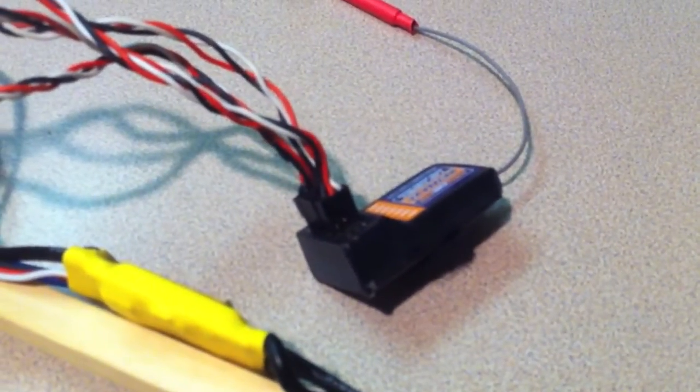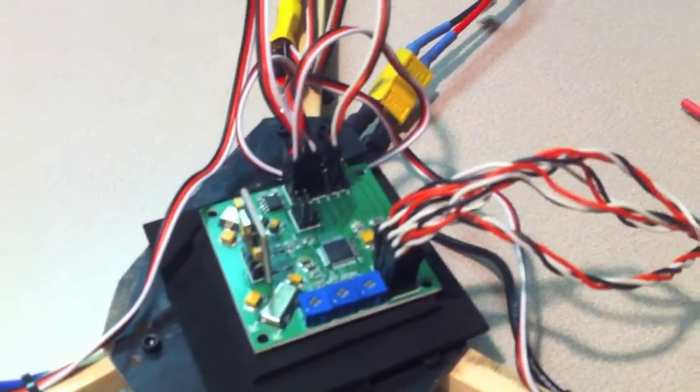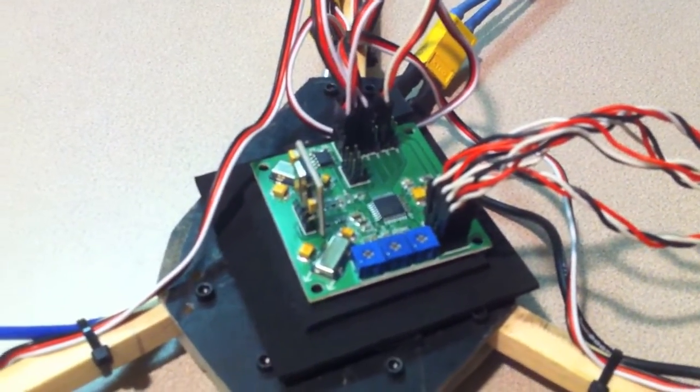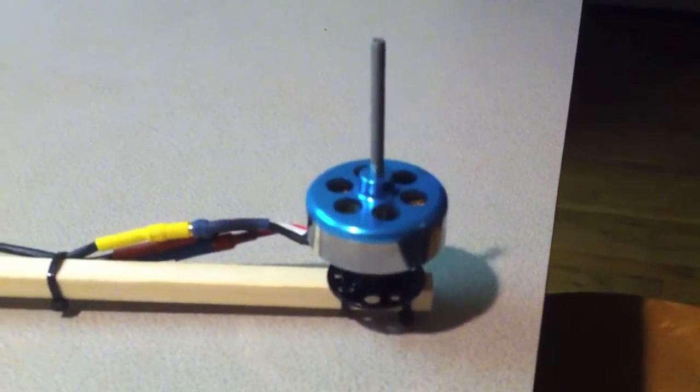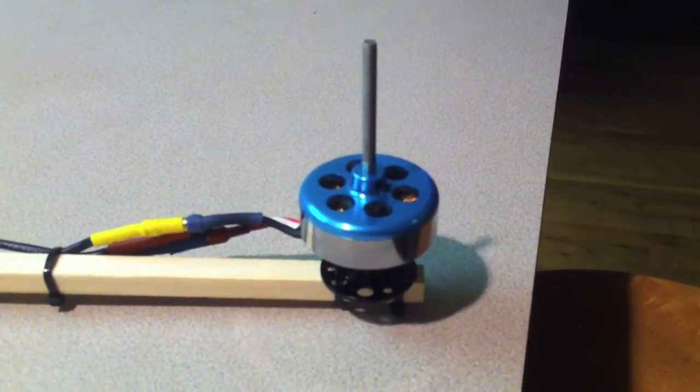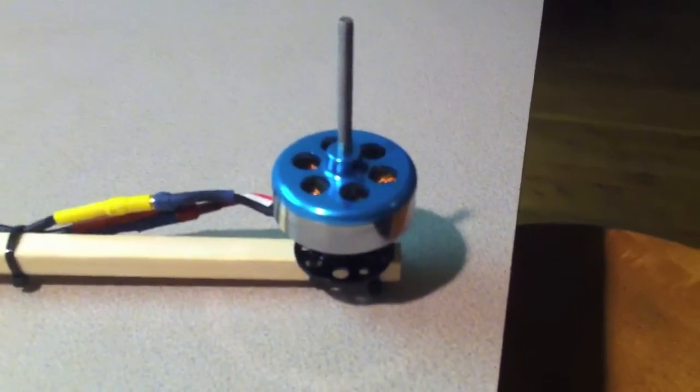I'm going to use a Hobby King six channel receiver 2.4 gigahertz with a Turnigy 9x transmitter. I've got on the end the Hextronic DT 700s, not the 750s but the 700s.